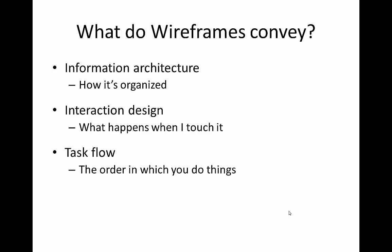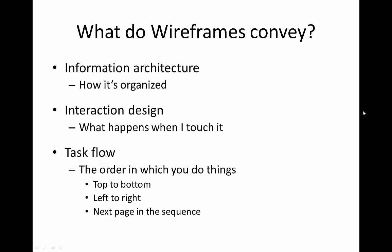And wireframes show task flow — we're going to talk about this a lot more in our next lecture. Task flow is essentially the order in which you do things. We want to make sure that the order in which our personas want to accomplish their scenarios matches what they see in the wireframe or on the screen. People generally like to do things from top to bottom, from left to right.